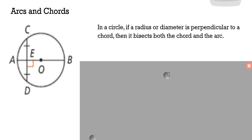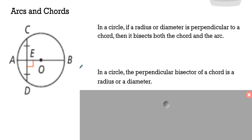If you've got something that's perpendicular, and that could be a radius or diameter, then you've got something that you know to be bisecting the chord and the arc. Likewise, if we flip that around, if you have a perpendicular bisector of a chord, it's going to be a radius or a diameter.